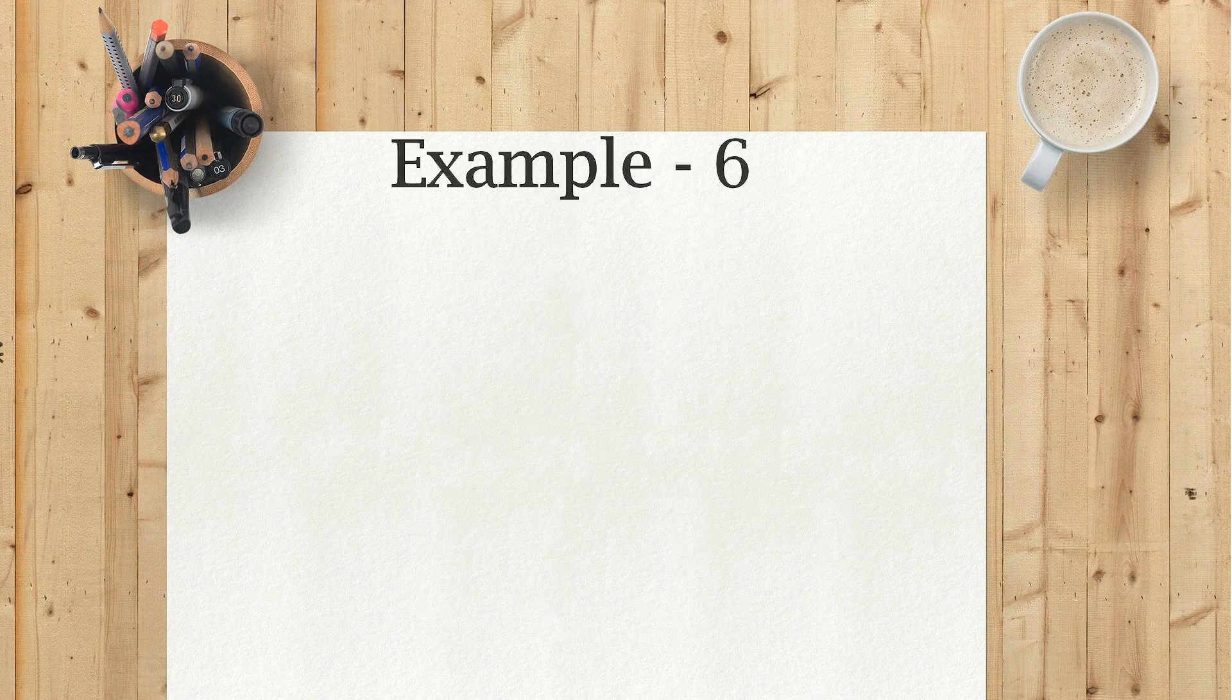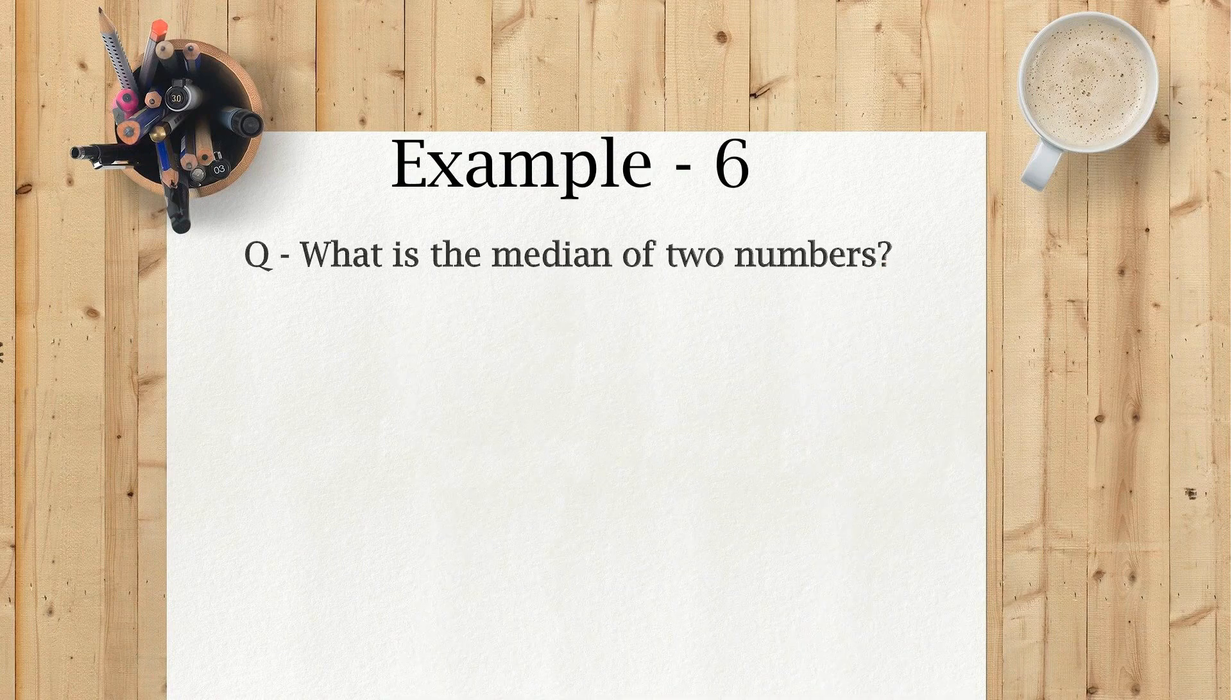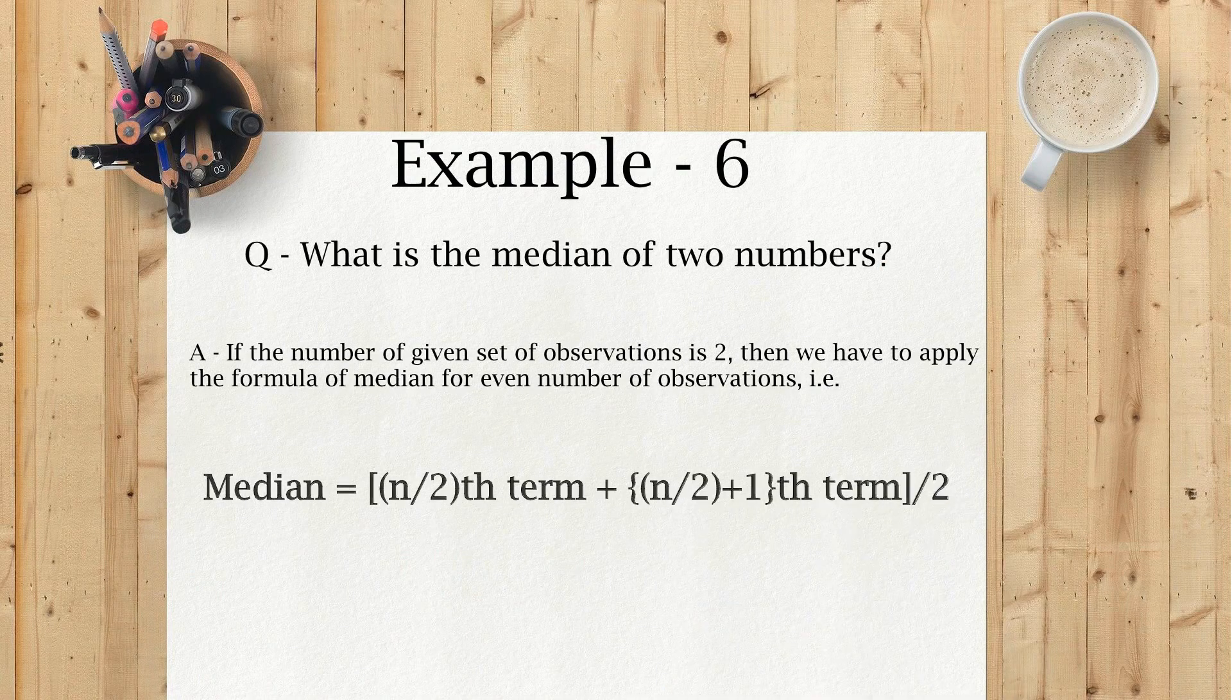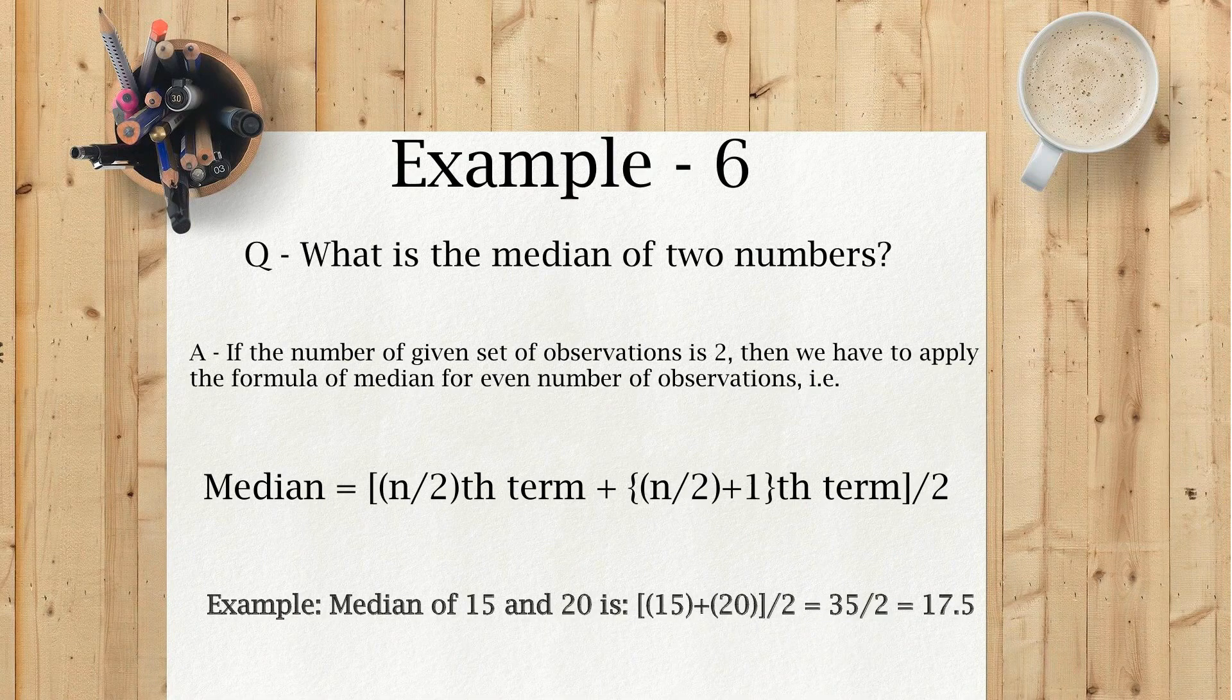Example 6. What is the median of two numbers? If the number of given set of observations is 2, then we have to apply the formula of median for even number of observations.